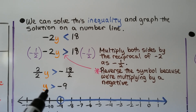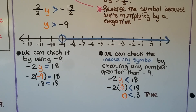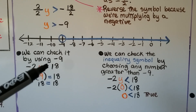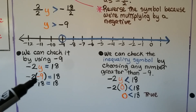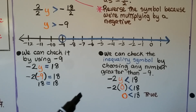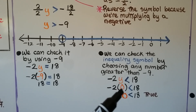Because it's greater than negative 9, it doesn't include negative 9. So we put an open circle and graph all numbers greater than negative 9 heading towards 0. We check by using negative 9 with an equal sign: negative 2 times negative 9 gives 18, so 18 equals 18 — true. We can also check the inequality symbol by using 0, which is greater than negative 9: negative 2 times 0 is 0, and 0 is less than 18 — true. So our inequality symbol is correct.